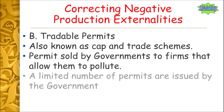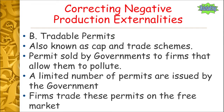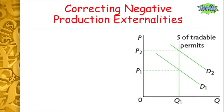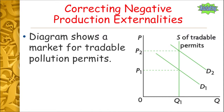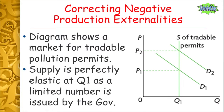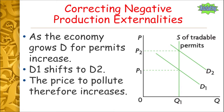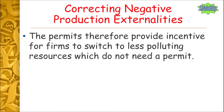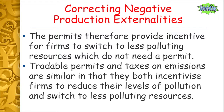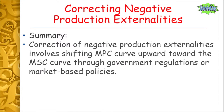Tradable permits are also known as cap-and-trade schemes. The government sells permits to firms that allow them to pollute, but limits the total amount of pollution in the economy by controlling the number of permits sold. Firms can then trade these permits on the free market. Looking at the supply and demand curve of tradable permits, we have a fixed supply curve because there are only a limited number of permits available. As the economy grows, demand for permits increases — D1 shifts to D2 — and the price to pollute increases. As the price to pollute rises, firms are incentivized to find less polluting alternatives, lowering their costs. Tradable permits and emissions taxes are similar in that they both incentivize firms to reduce pollution and switch to less polluting resources.